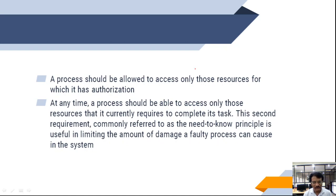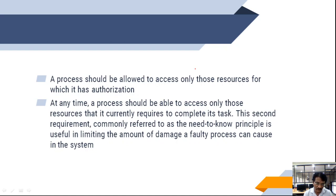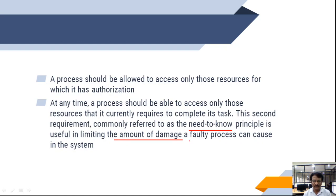At any time, a process should be able to access only those resources that are currently required to complete the task. It should not hold some resources while asking for other resources — which we have seen when discussing deadlocks. This second requirement is commonly referred to as the need-to-know principle, which is useful in limiting the amount of damage a faulty process can cause to the system.